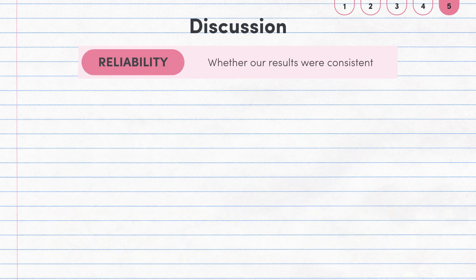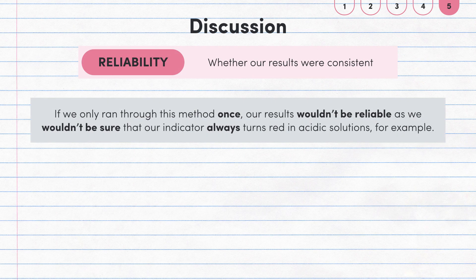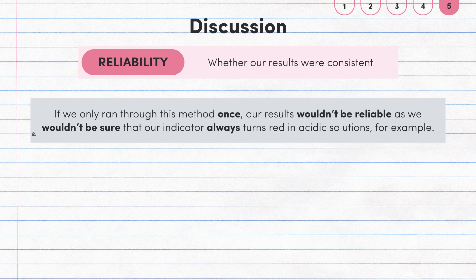OK, now onto reliability, which is whether our results were consistent. If we only ran through this method once, our results wouldn't be reliable because we wouldn't be sure that the red cabbage indicator always turns red in acidic solutions, for example. To make sure that this is the case, we need to repeat the experiment at least three times to make sure we get the same results.